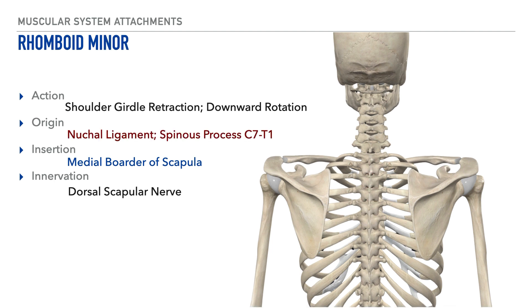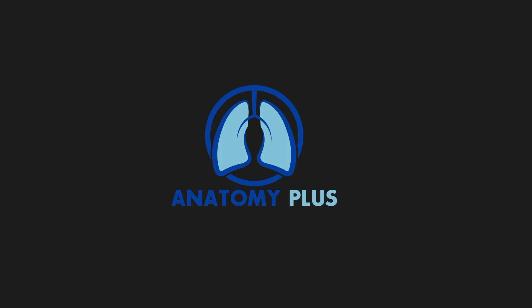Lastly on our list of muscles is the rhomboid minor. Its actions include shoulder girdle retraction and shoulder girdle downward rotation. It originates on the spinous processes of the C7 and T1 vertebrae, and we'll show those origin points here. Its insertion is on the medial border of the scapula, and its innervation is the dorsal scapular nerve. Thank you for watching this video — I hope it's been helpful and I look forward to connecting with you in the next one.